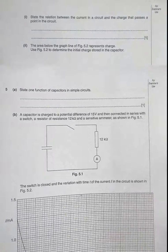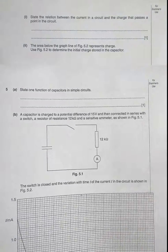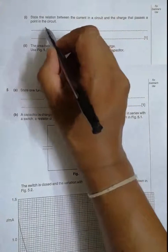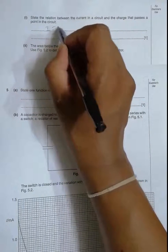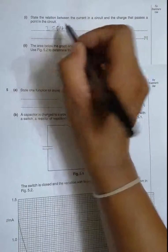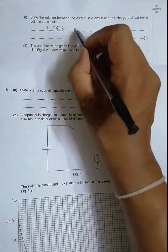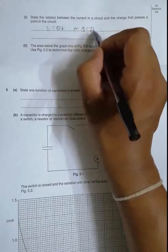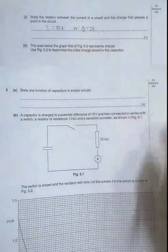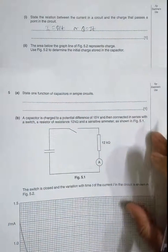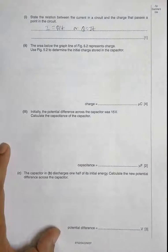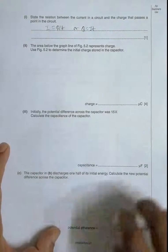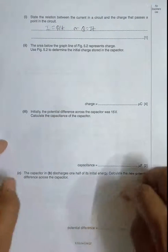The question asks us to state the relationship between the current in the circuit and the charge that passes through a point in the circuit. We can simply say I equals Q divided by t, or equivalently Q equals I times t. Both relations can be used.